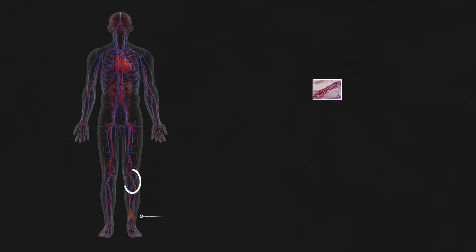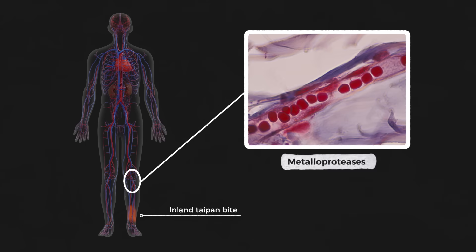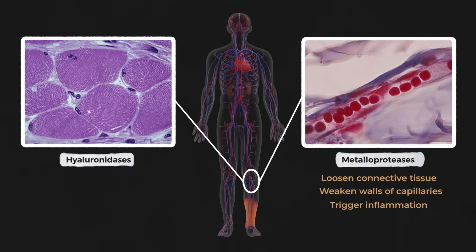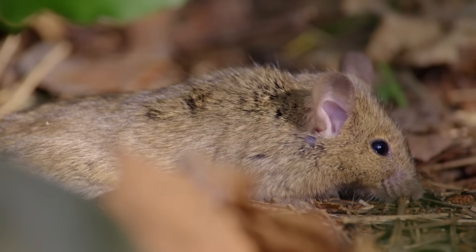First, one type of enzyme breaks down the proteins in the blood and the blood vessels, loosening the connective tissue, weakening the walls of the capillaries, and triggering inflammation in the body. Alongside this, another type of enzyme helps to increase the rate of absorption and spread of the venom, acting as a sort of venom accelerant. So, what actually kills the animal?